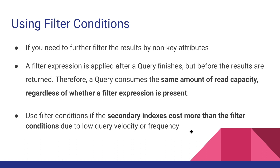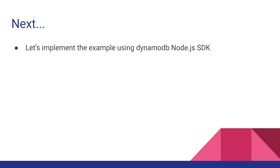Use filter conditions carefully. One valid pattern is filtering first by partition key and sort key, then applying a filter condition on the returned results. Another use case: if a secondary index costs more than using a filter condition — due to low query velocity or frequency — filter conditions may be more cost-effective. If you define a GSI you must allocate RCU and WCU for it, and infrequent use wastes money. Check query frequency before deciding. In the next episode, we'll implement this example using the DynamoDB Node.js SDK.